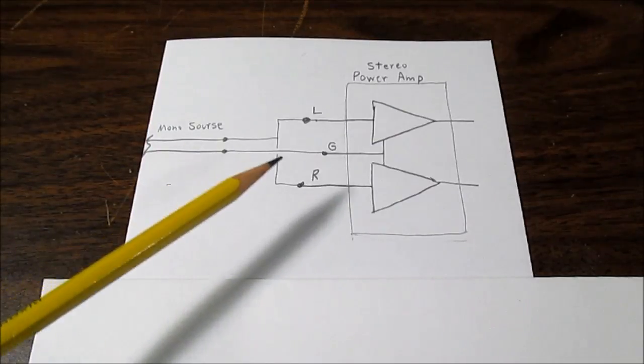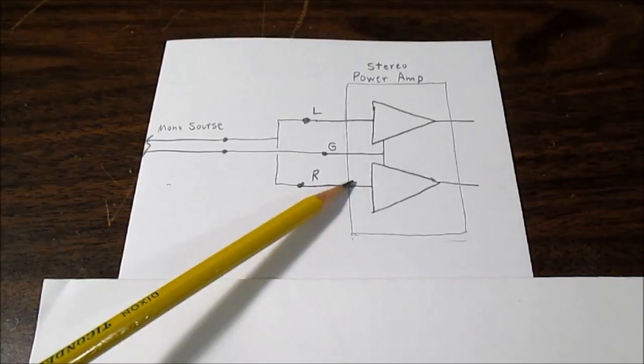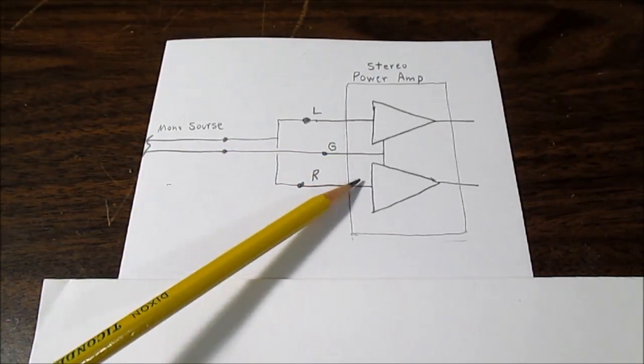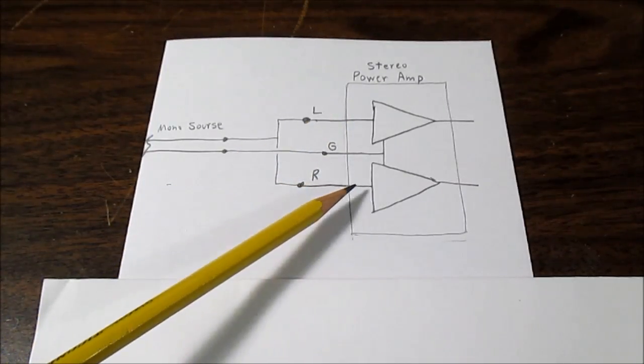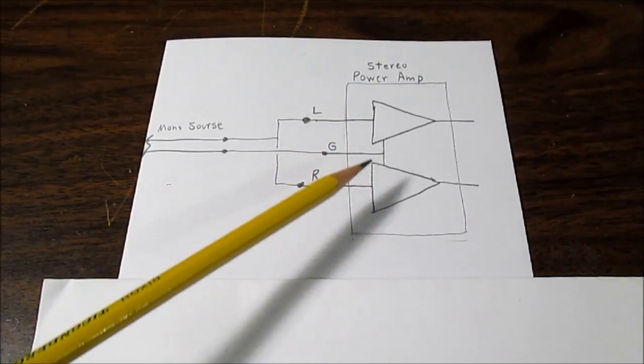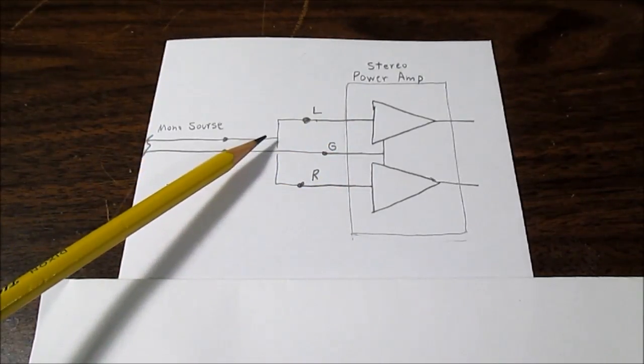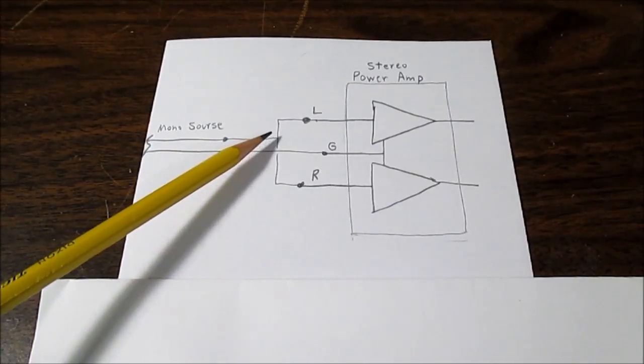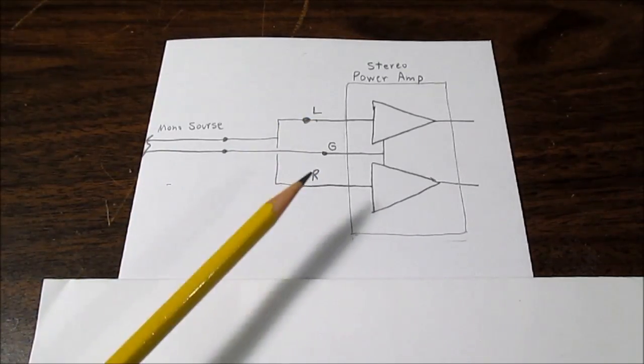The only possible issue is with two inputs this line is driving, you might have to worry about the input impedance of the amplifier. Now in the real world the input impedance of the amplifier is quite high and the driving capability of the output where the signal comes from will be able to handle that. But just be aware of that that you might run into an issue.